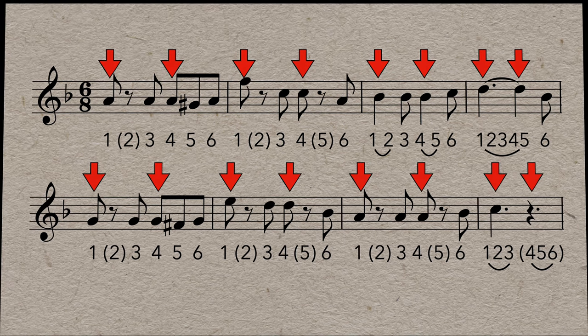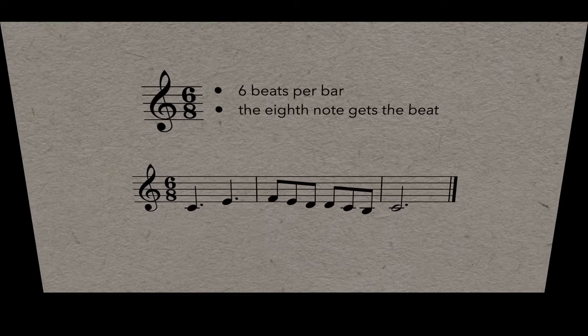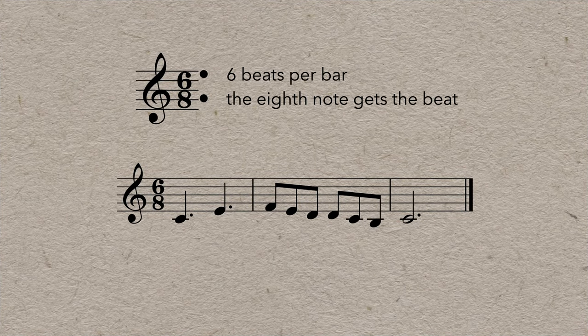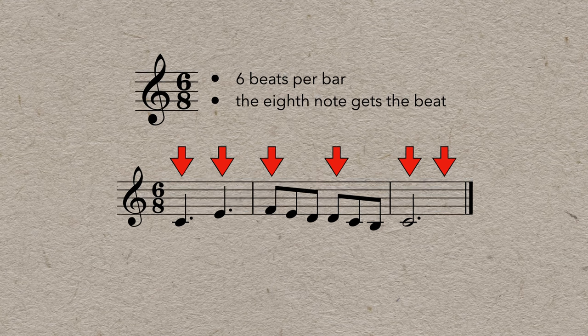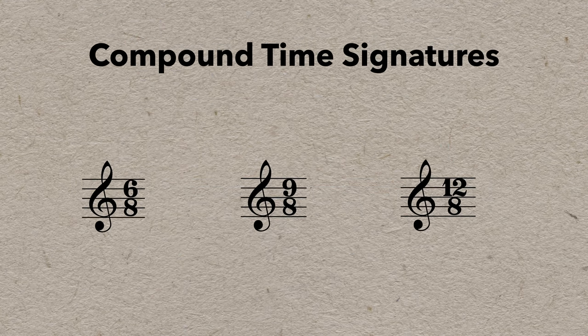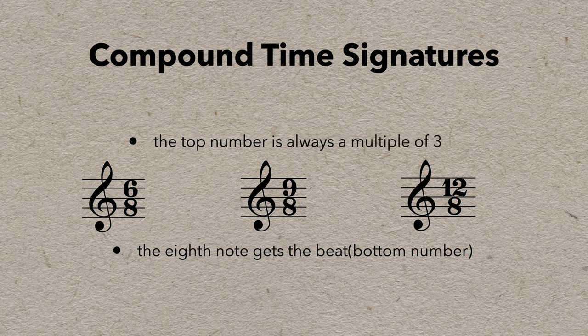Now at this point, I think it's worth mentioning that 6-8 is a little weird. 6-8 by definition means 6 beats in a bar and we're counting the eighth note. But in practice, 6-8 is in duple meter, 2 beats per bar. But that's the nature of compound time signatures. The base unit is the eighth note, but the top number is always a multiple of 3, because compound time signatures all have an underlying triplet feel.